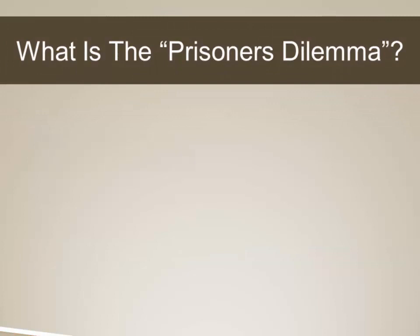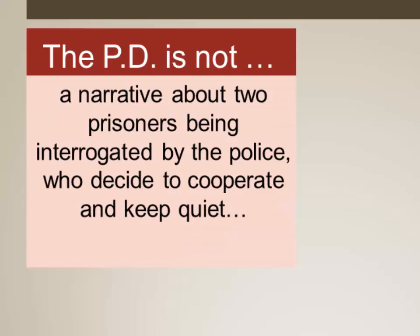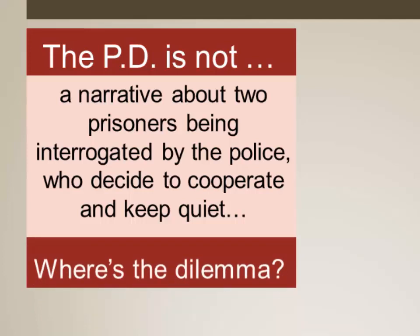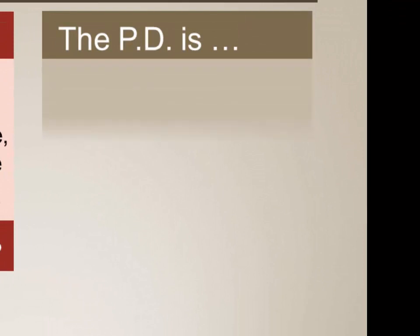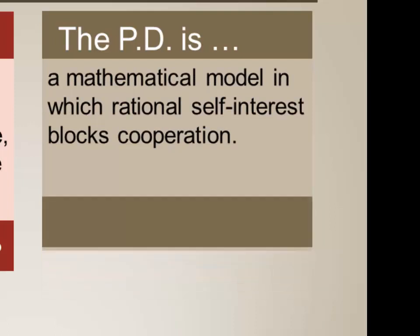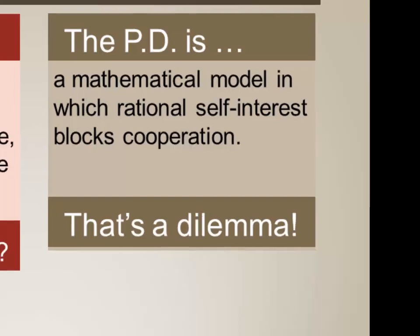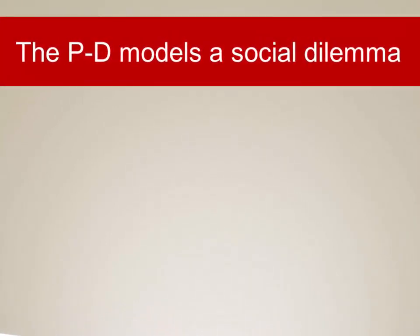So what is the Prisoner's Dilemma? We've gone over this before, and we stress that the Prisoner's Dilemma is not what it's often thought to be — a narrative about two prisoners being interrogated by the police who decide to cooperate and keep quiet. If we think about that, we have to ask, where's the dilemma? Instead, we've defined the Prisoner's Dilemma as a mathematical model in which rational self-interest blocks cooperation. When our rational self-interest is not what's best for us collectively, this is what's known as a social dilemma, and the Prisoner's Dilemma models a social dilemma.